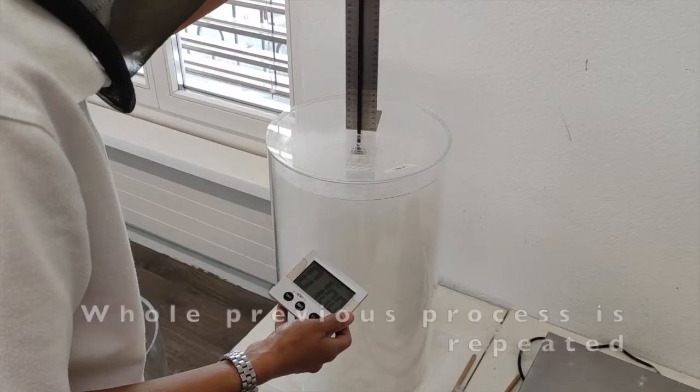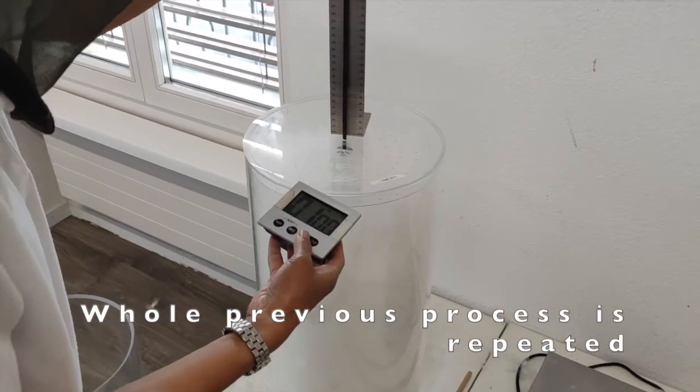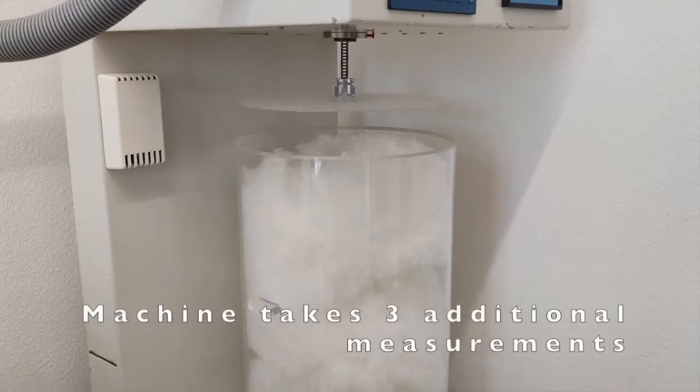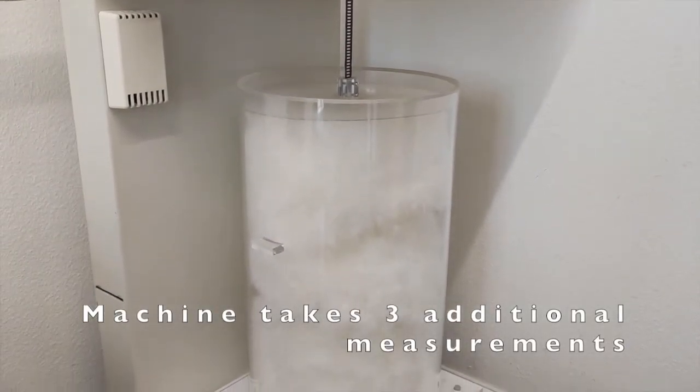This was the steam process. If you instead opted for the tumble dry option, the whole previous process is first performed, and then a machine takes three additional measurements.